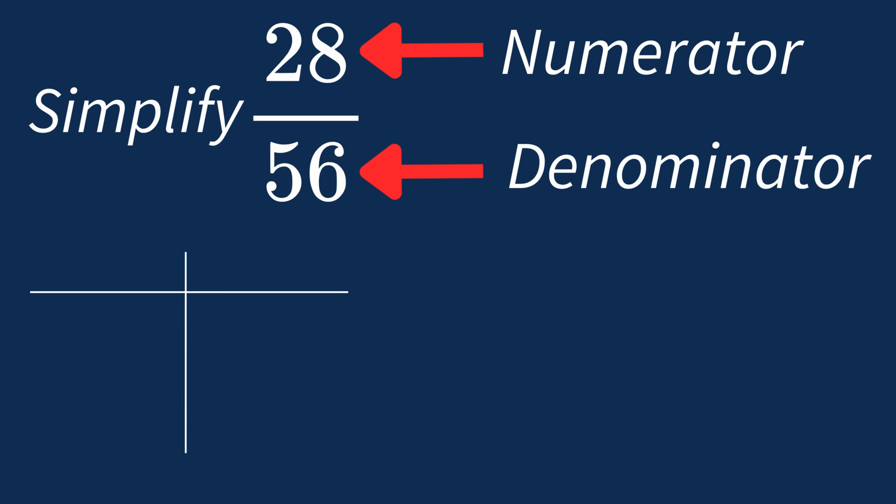First, let's list out the factors for each. For 28, the factors are 1, 2, 4, 7, 14, and 28.